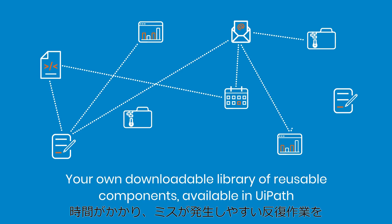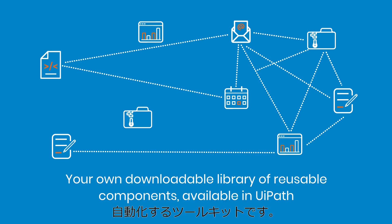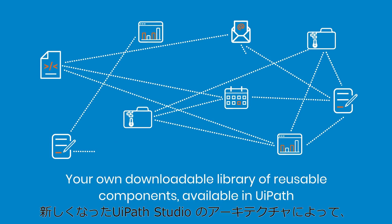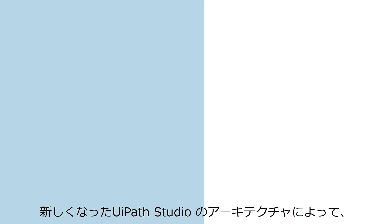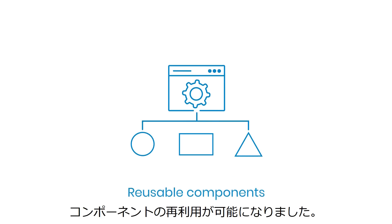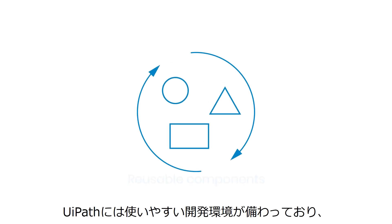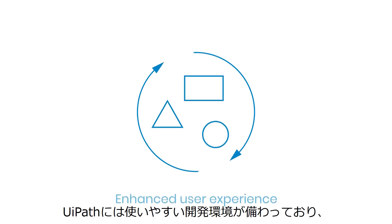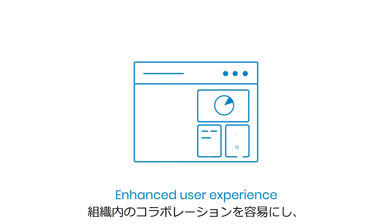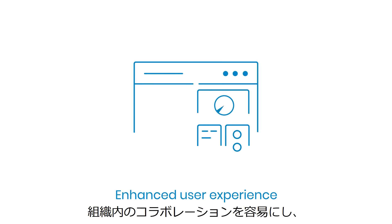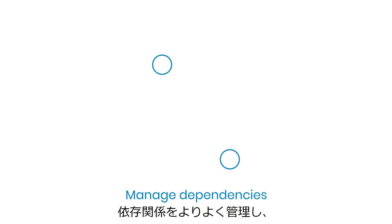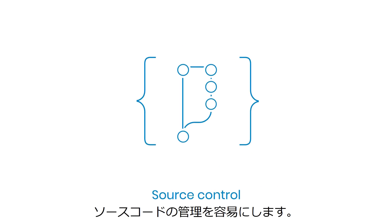UiPath is your end-to-end toolkit for automating time-consuming, error-prone, repetitive processes — all made possible by a new studio architecture that enables reusable components. UiPath features an easy-to-use integrated development environment that facilitates collaboration in your organization, better manages dependencies, and makes source control a breeze.